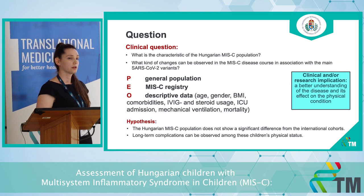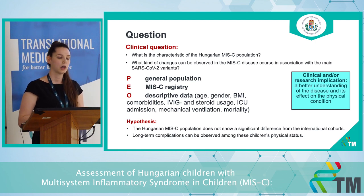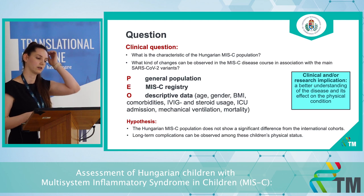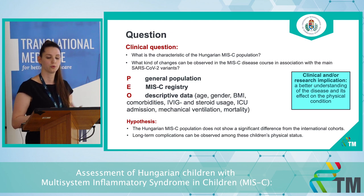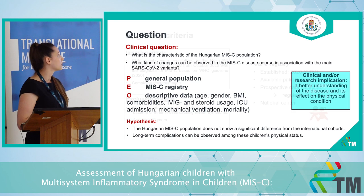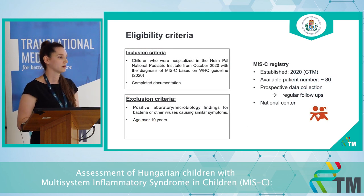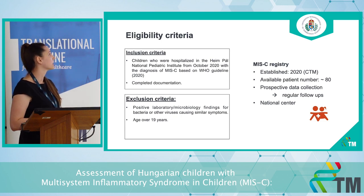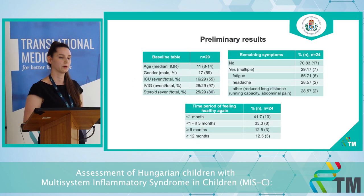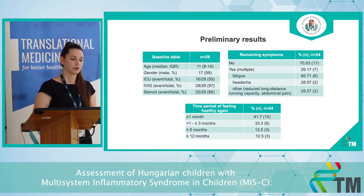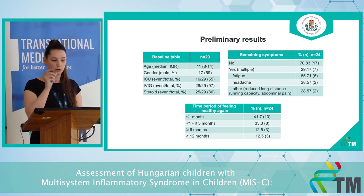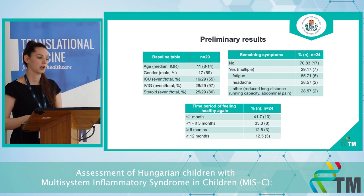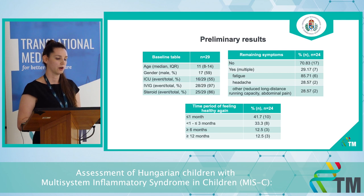We would like to make a descriptive analysis based on this registry, focusing on descriptive data like age, gender, BMI, as well as collecting data about IVIG and steroid usage and mortality. The CTM registry was established in 2020 at the High Impala National Pediatric Institute. Preliminary results from the first 29 patients show a median age of 11 years with a slight male dominance. ICU admission rate was around 55%, and there was high steroid and IVIG usage among these children.